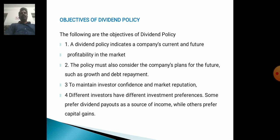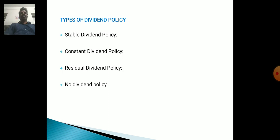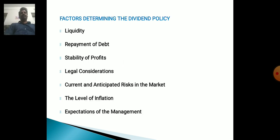4. Different investors have different investment preferences. Some prefer dividend payouts as a source of income while others prefer capital gains. 5. Types of Dividend Policy: Stable Dividend Policy, Constant Dividend Policy, Residual Dividend Policy, No Dividend Policy.